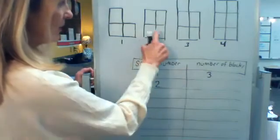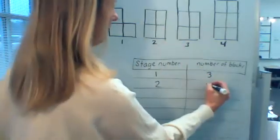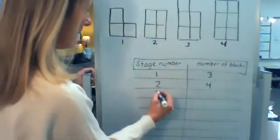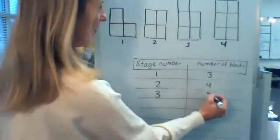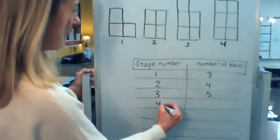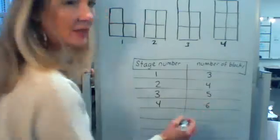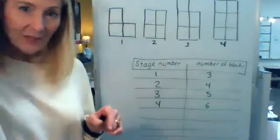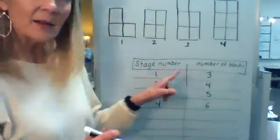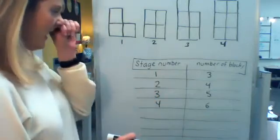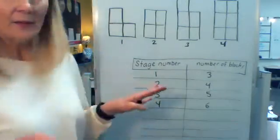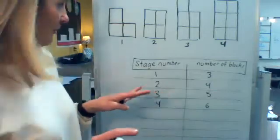Stage number two, how many blocks are there? Four. Stage number three, how many blocks are there? Five. Stage number four, how many blocks are there? There's six. And that's all we're given. But I feel like this is going to be plenty of data to help us find out the number of blocks at any stage number.